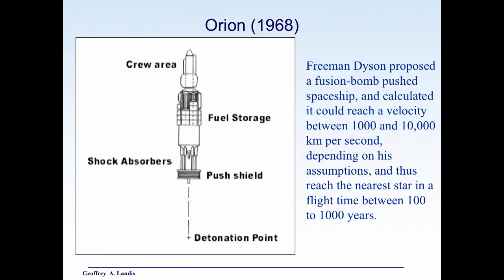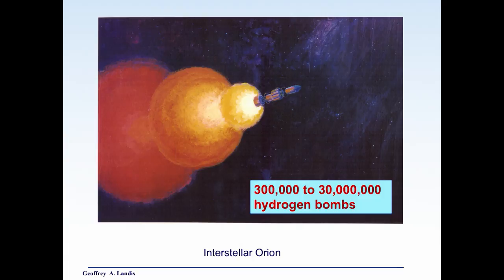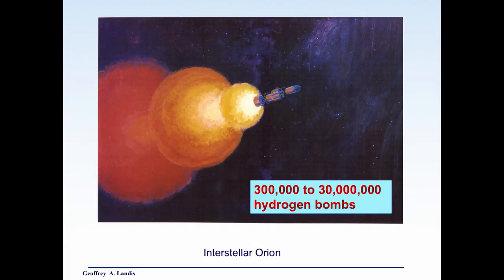Well, people have proposed interesting things. Here's Freeman Dyson, 1968, proposed that the nuclear bomb-powered rocket he had been working on at the time said, what if we make a starship out of this? He said it could reach somewhere between 1,000 to 10,000 kilometers per second and make a trip to the nearest star somewhere between 100 to 1,000 years. So here's that Orion spacecraft. Dyson said it will take 300,000 to maybe 30 million one megaton hydrogen bombs. Well, that's a lot of nuclear bombs. This is not an easy problem.